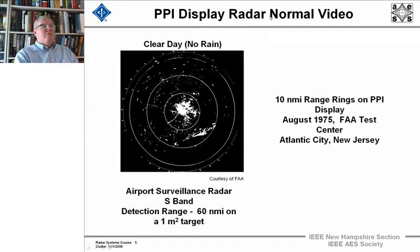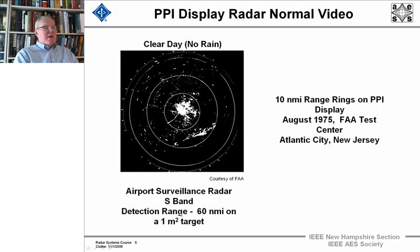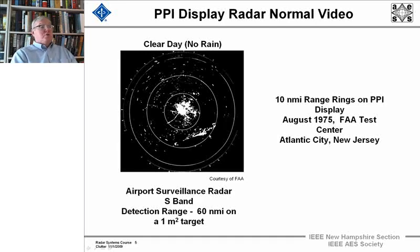Here's a PPI display of what we call the normal video — unprocessed — with 10-mile range rings. This was taken in August 1975 at the FAA's test center in Atlantic City, using an airport surveillance radar at S-band. That radar could detect a one-square-meter target, like a Piper Cherokee, at 60 nautical miles. What we see here are the hotels along the boardwalk — tall casino buildings — relatively intense urban clutter. Many of the other features are individual large scatterers.